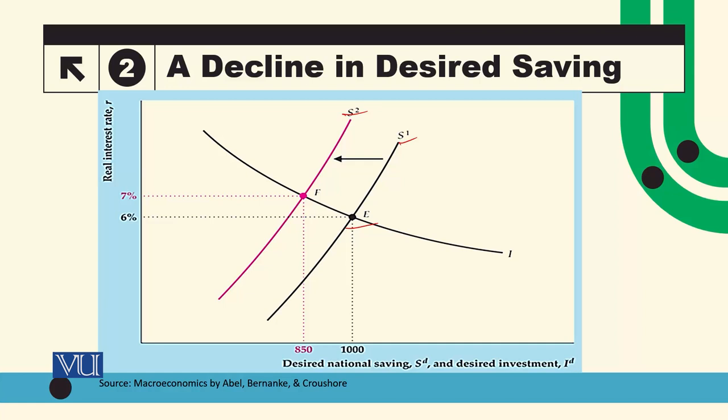When the saving curve shifts, the interest rate changes along with equilibrium values of saving and investment. Government spending increases cause saving to fall, and the interest rate would partially offset this, but overall saving and investment would be smaller.